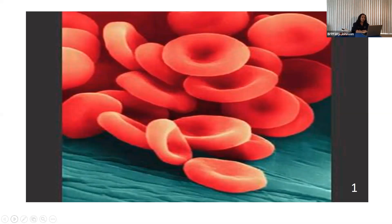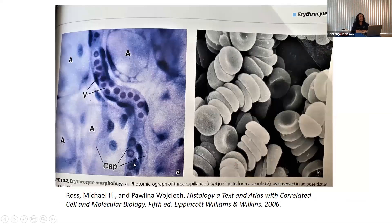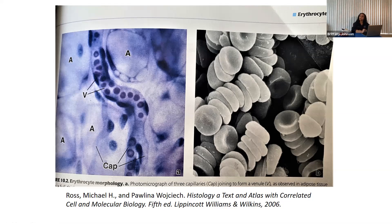One other thing to mention about this cell is that in traveling, it has to travel through very small passageways. In this picture, you're looking at red blood cells, and it's actually showing some of the vessels the red blood cell has to pass through. We see three capillaries forming into a venule. Red blood cells on average are about seven micrometers in size, but capillaries can range anywhere between five to ten micrometers. So how does a red blood cell get through these smaller capillaries? Well, its structure allows for it — there is plasticity in the structure.